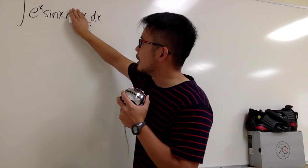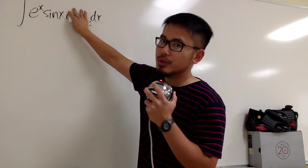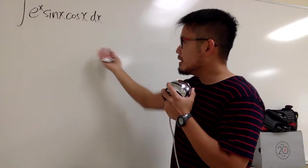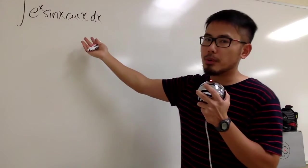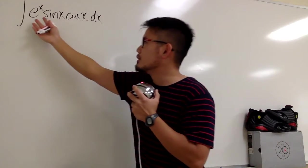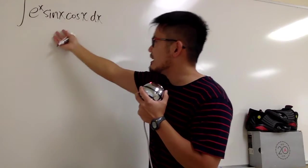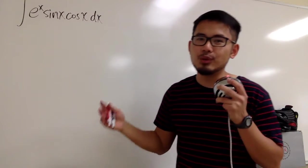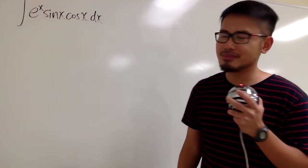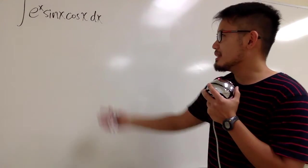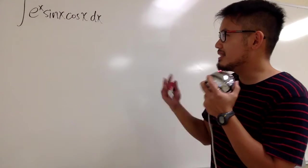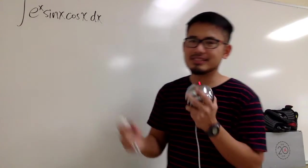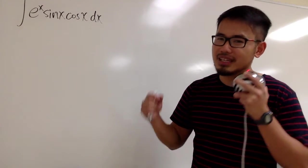To do this integral right here, we could just use integration by parts. If you want to use integration by parts as it is, with e to the x, sine x, and cosine x, you can still do it, but it would be too long. So let's look at this and try to think about a way to shorten the inside, if that's possible.